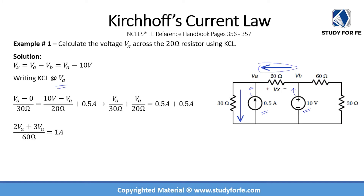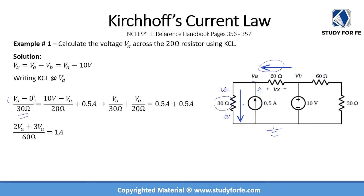That leaves us with only one branch: the 30 ohm resistor branch. Since current is entering the node from the 0.5 amp source and from the 20 ohm resistor, it is safe to assume that the 30 ohm resistor current will leave the node. Even if your assumed current directions are incorrect, you will just see a negative sign — so just be consistent. The current passing through the 30 ohm resistor is VA minus 0, divided by 30 ohms, where VA is the voltage on one side and 0 is the virtual ground on the other side.